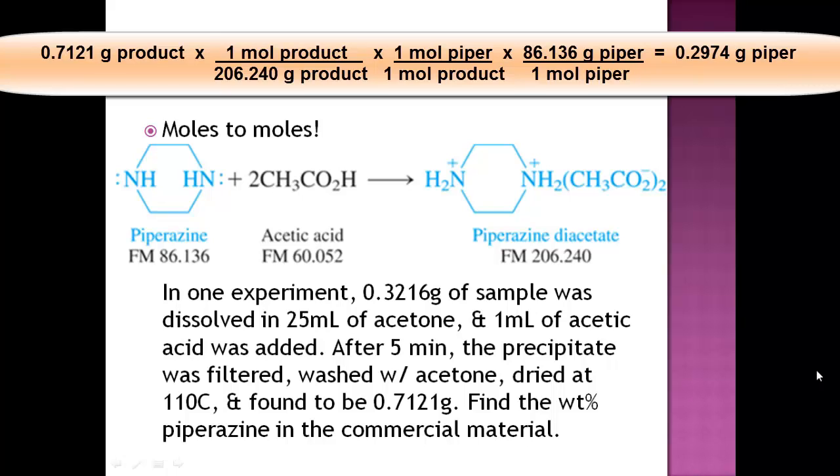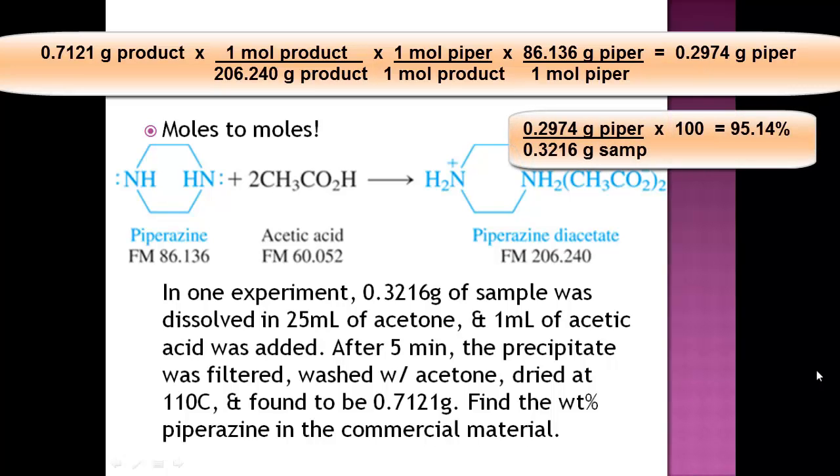You already have the grams of the substance, now you just need the grams of the sample. 0.2974 grams divided by the 0.3216 grams of the sample times 100 gives you 92.47%. Easy peasy. We will go ahead and do more of these in class, but now I want to talk about when the stoichiometry is actually not 1 to 1.